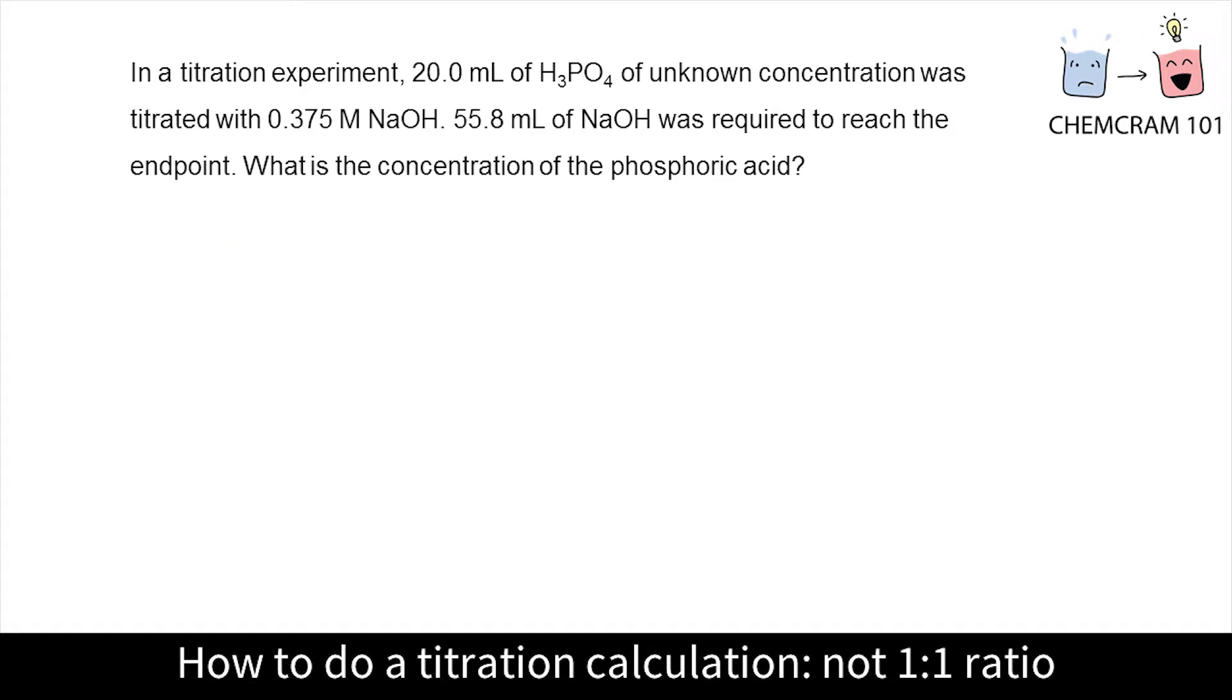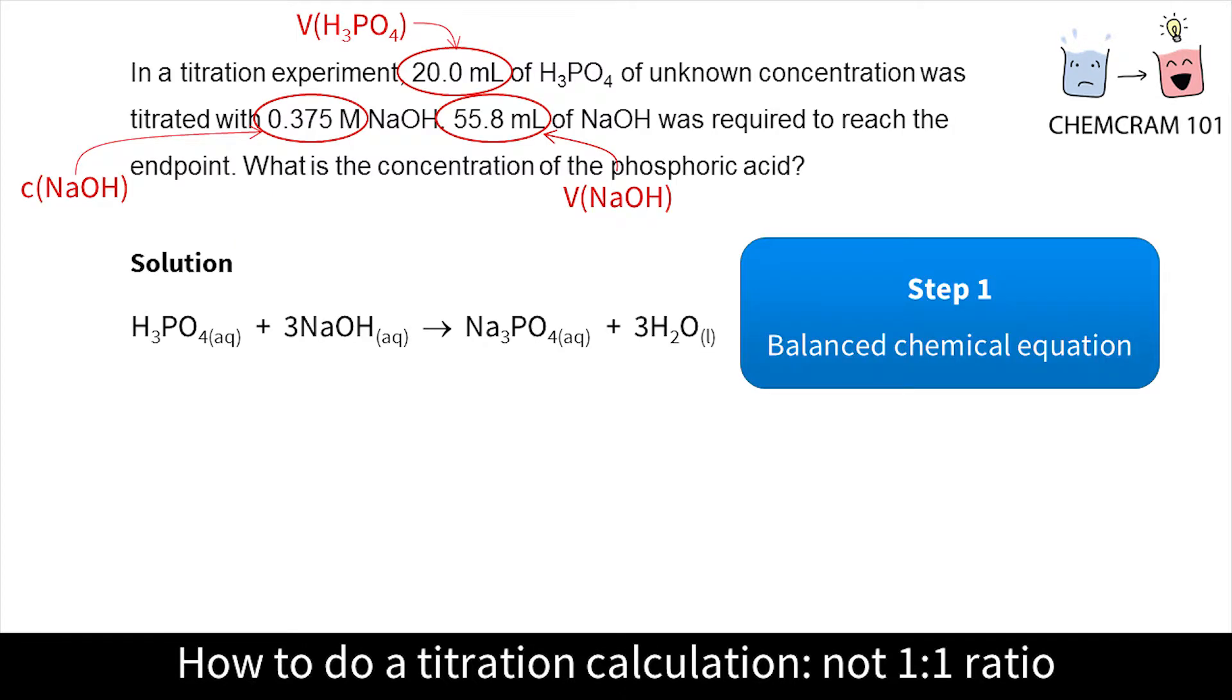Here's a sample question. Let's label our numbers. Step one is to write a balanced chemical equation. For this reaction the products have water and sodium phosphate.